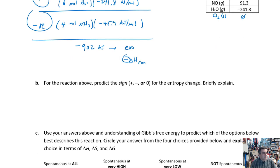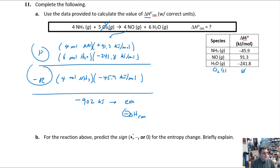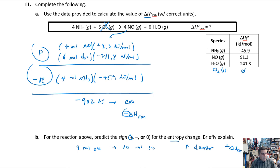Now predict the sign of ΔS for this reaction. On the reactant side there are 9 moles of gas; on the product side there are 4 + 6 = 10 moles of gas. Creating one extra mole of gas increases disorder, so ΔS of reaction is positive.